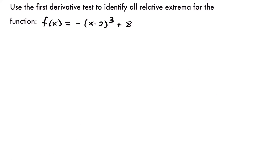Let's look at another example. We have the function f of x equals negative x minus 2 quantity cubed plus 8. Let's start this one just like the others by taking the derivative and setting it equal to 0. We'll have f prime of x equal to — in this case we're going to need the chain rule. We have an inside function of x minus 2.